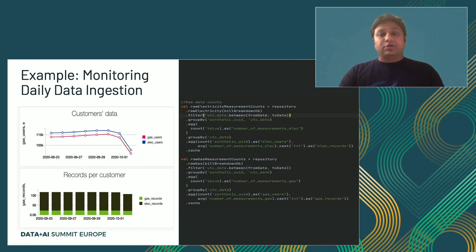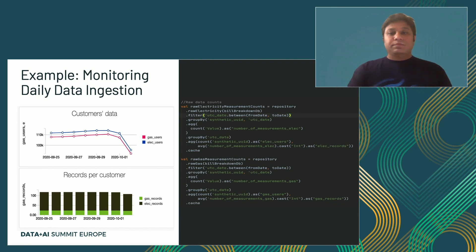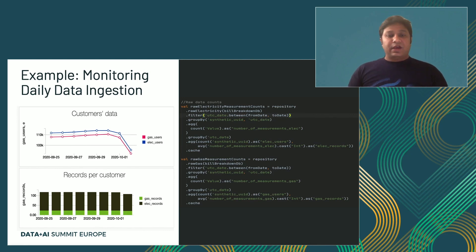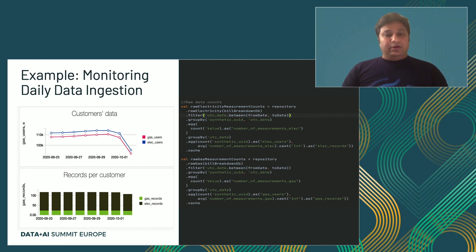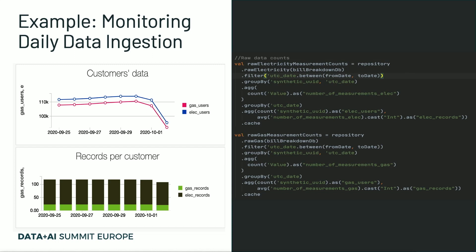On the right part, I show the sample code base for how we receive this data. We first make a call from the repository based on the date range, then we group by the specific date and also the unique identifier of the customer record. Then we do this aggregation and make this record, and we also cache this information. Why do we cache? So that later in the data pipeline, if we need to do the same calculation, we don't need to go and execute everything again — we can just reuse from this cached dataset.